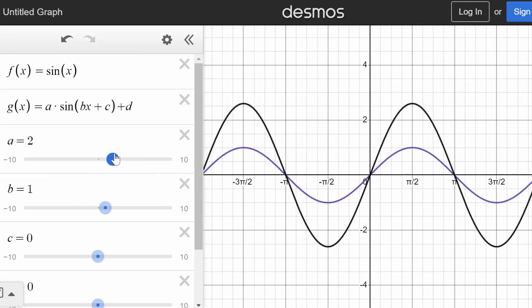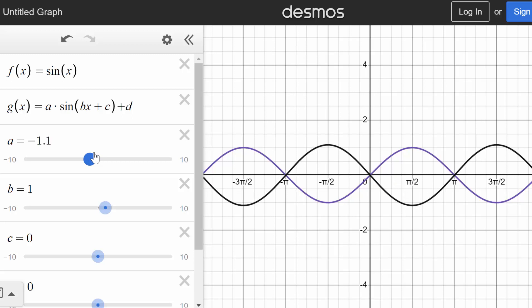But notice that if we make a fraction, it just squishes it. If we make it negative, it reflects it. So at negative 1, notice that the amplitude of this new reflected function is the same as the amplitude of our parent function. This is why when dealing with the amplitude, we just care about the absolute value of this coefficient here.